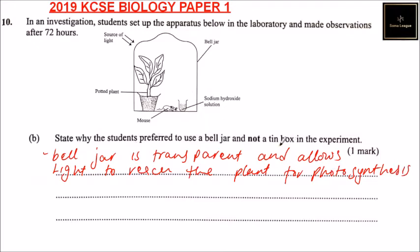A tin box would not allow light to get through because it is opaque, meaning the plant won't get the light needed for photosynthesis. The other reason is that the tin is made up of metal, and it may heat up and affect the temperature inside the experiment, where we have the mouse and the plant.